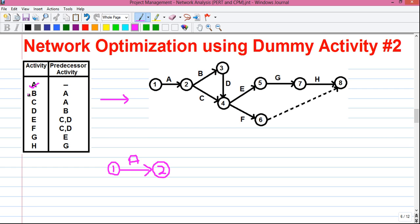Next, activity B which has the predecessor activity of A. That means it can be started after activity A is completed. So activity A is finished at event two. So from event two, we can draw activity B, and B is ended at event three. Next, activity C which has the same predecessor activity, that is A. That means it will again start from event two. So this is activity C, and it will end at event four.